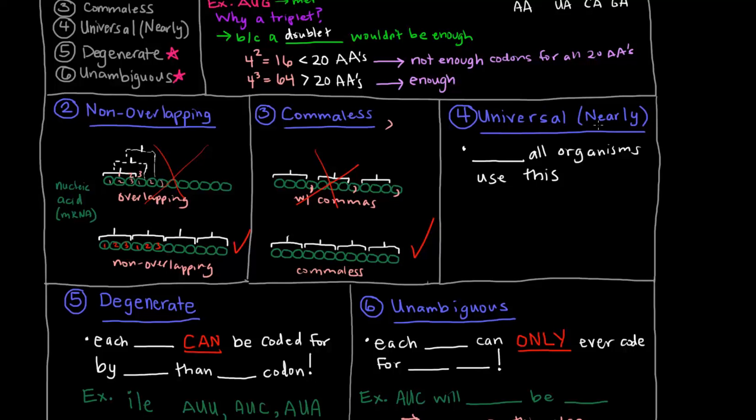Genetic code is also universal, and nearly universal. The reason that's there is because almost all organisms use this same genetic code. There are a few exceptions.